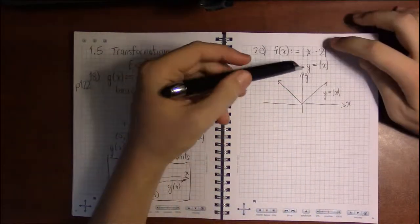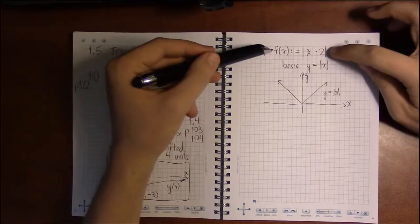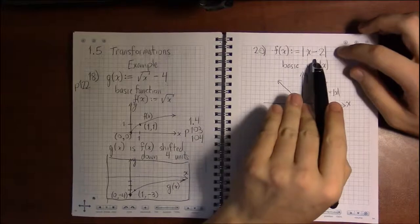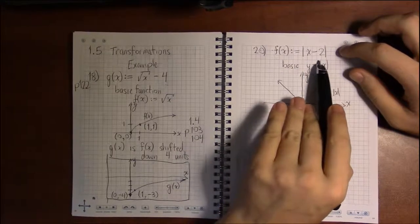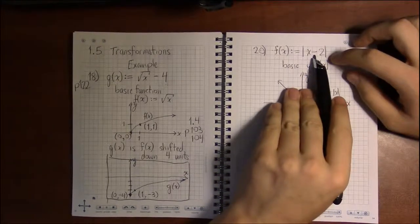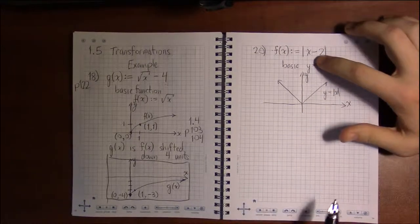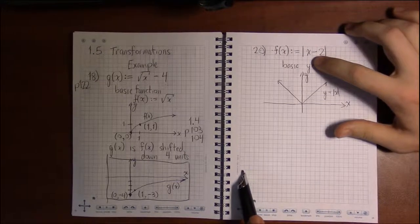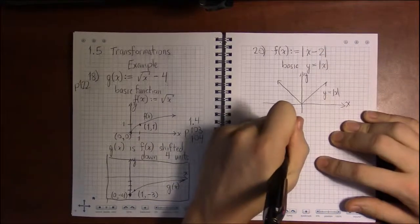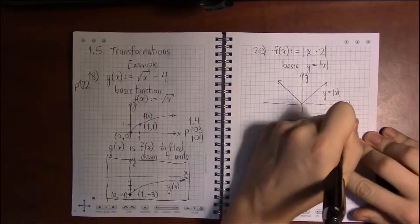The question becomes, how do we get f of x? What transformations do we need to apply to this basic graph? The minus 2 is inside the absolute values. That makes it a horizontal transformation. It's also subtracting, so x minus 2 means it's going to be a shift left or right. Because horizontal is backwards, we would think x minus 2 would move it to the left, but it doesn't.